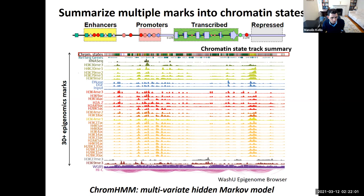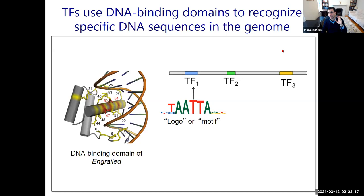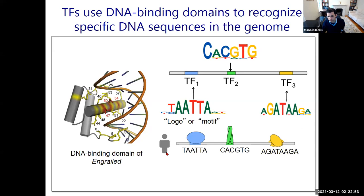We can use this approach to study where enhancer, promoter, and transcribed regions are in every cell type. The most interesting question is how this is all encoded by the genome — through sequence-specific proteins that recognize patterns of DNA sequence. Transcription factors use DNA-binding domains to recognize specific sequences, for example TATA or CACGTG, a palindrome reading the same on both strands.